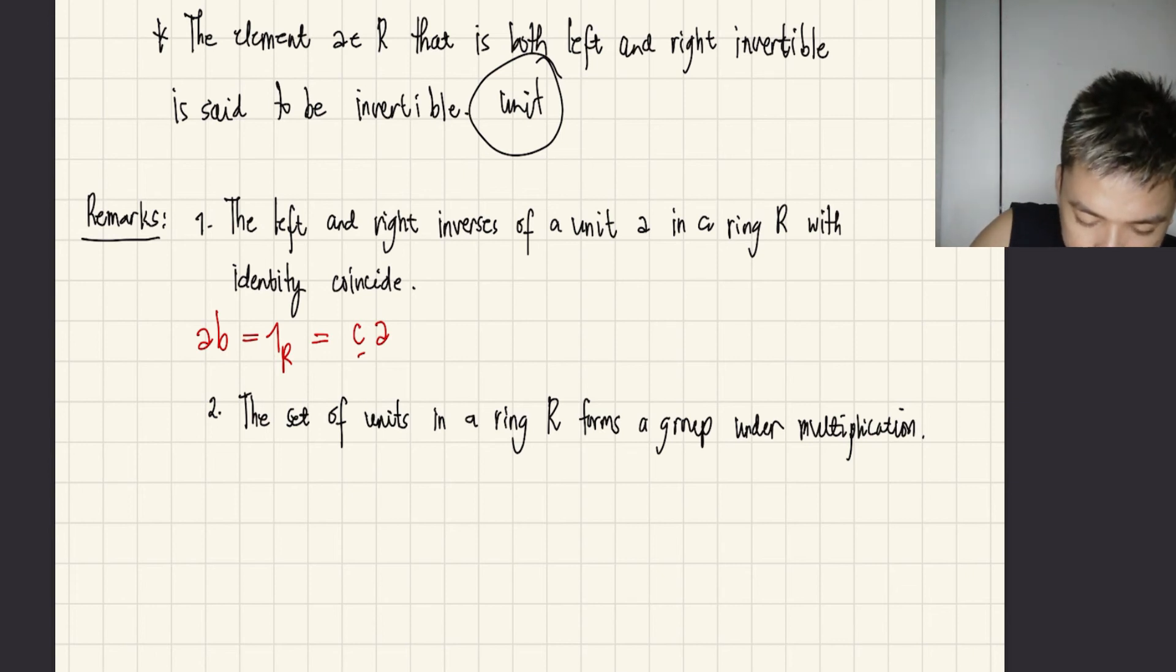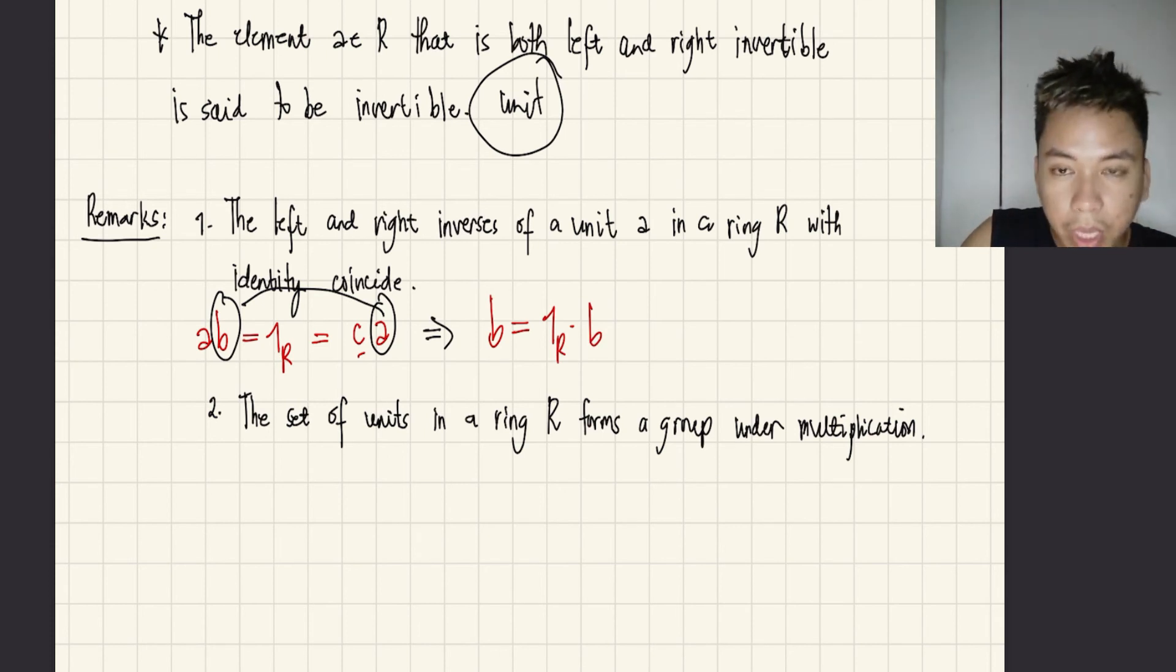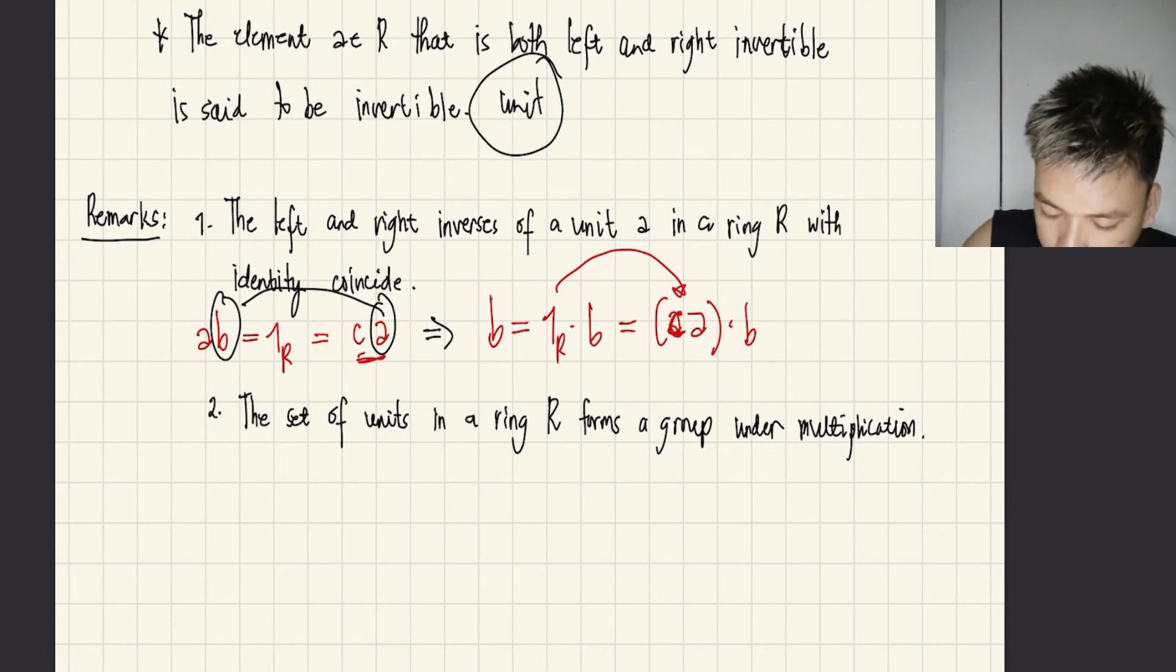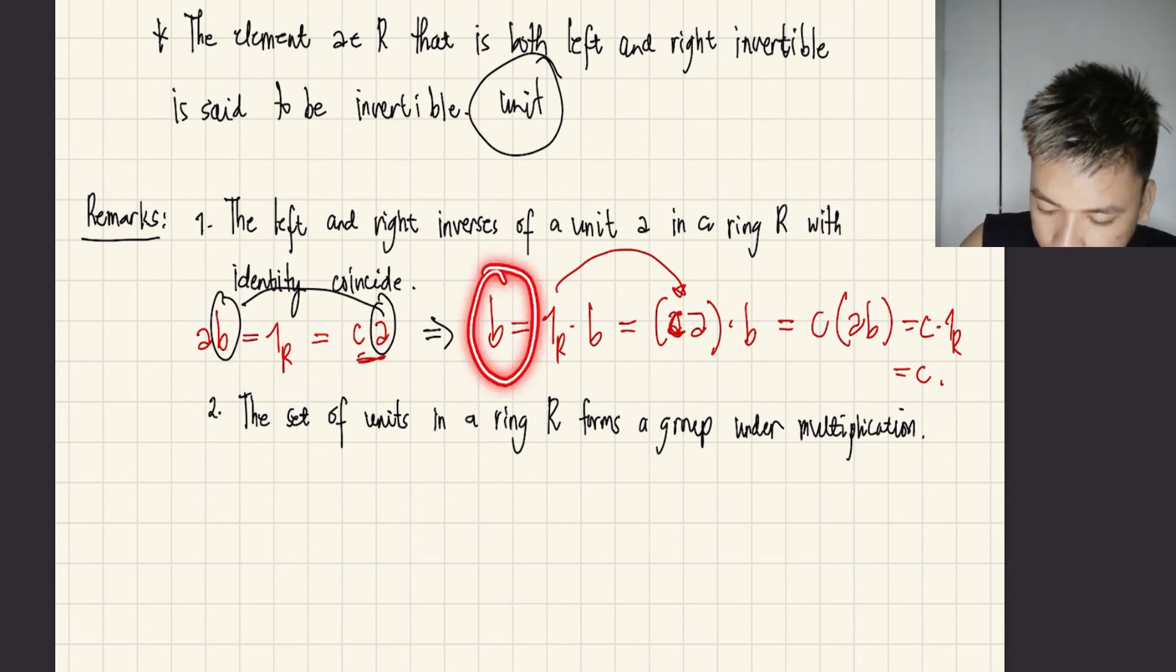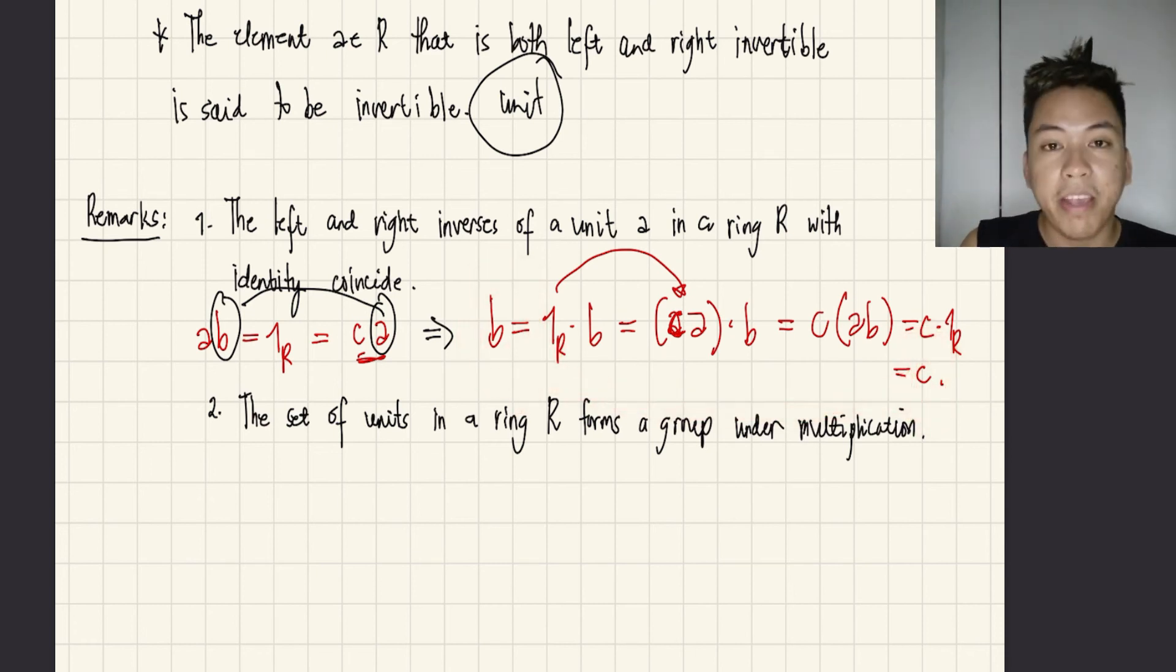Now, our goal here is to end up with these two things being equal. So observe that I can write B equals 1R times B. And 1R is equal to CA times B. So I substitute 1R by CA. And then I have the fact that C times A times B, because of course associativity holds in R. And so AB is the same as 1R, and so this equals C. Therefore, I have the conclusion that B and C coincide. So that's the message of the first remark.